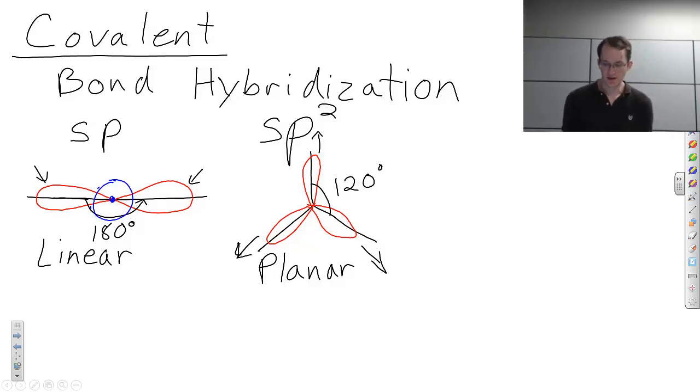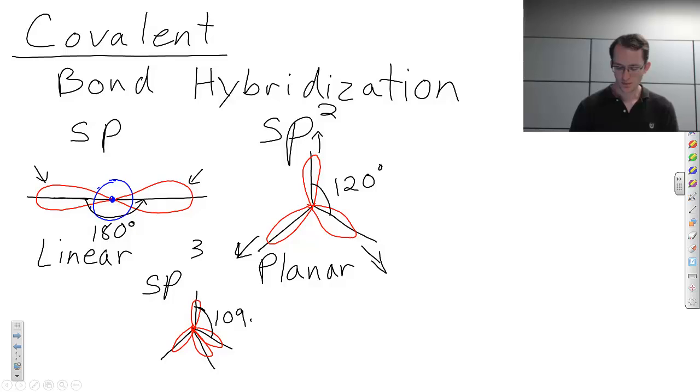And then there's another type that we need to know. And we call this sp3 hybridization. And the structure that this creates is a tetrahedron. So you have one vertically. This is actually in three dimensions, like that. And then I'm going to kind of draw this one back like that. And you have this very similar lobes, except they're in these three dimensions. And the angle between two lobes is smaller. It's 109.5 degrees. And so this is termed a tetrahedron.